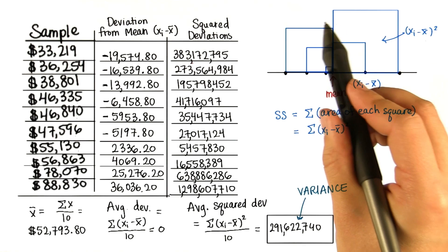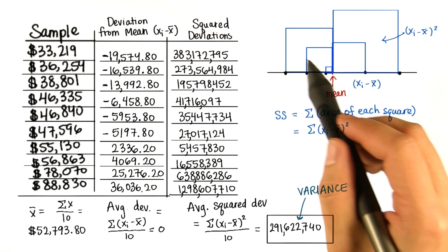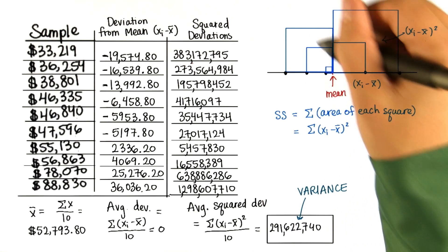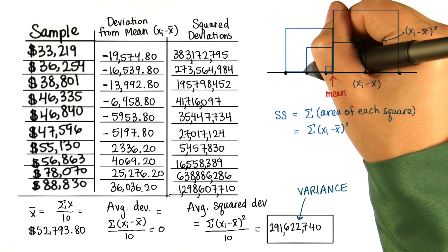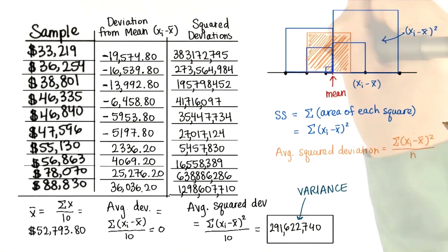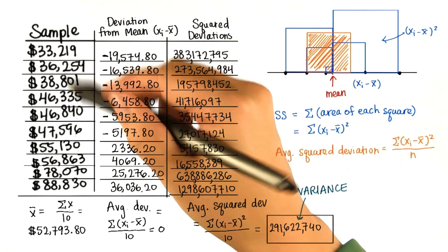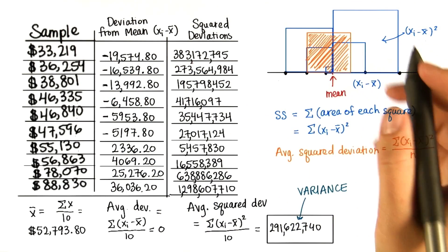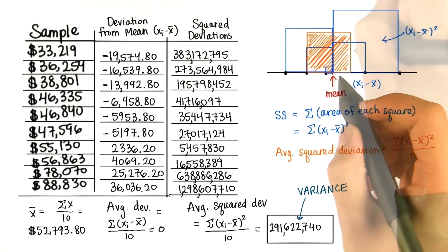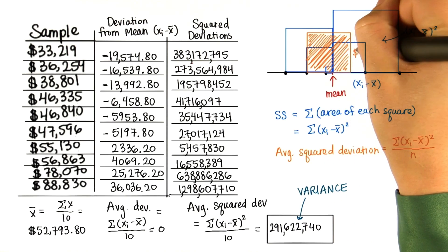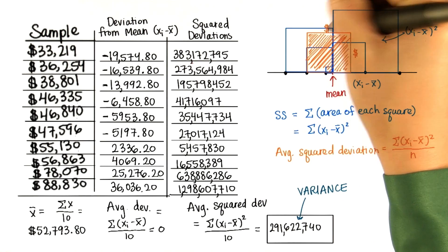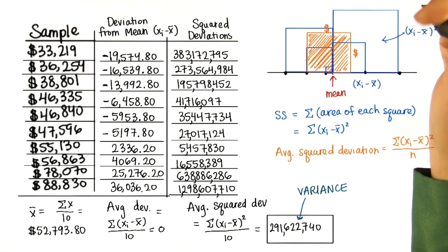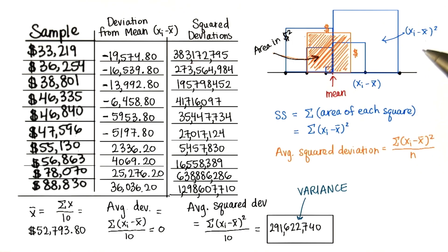So then we find the average square — the average square might be something like this size, let's say. In this case, the dimensions are in dollars, so the area of this square would have units of dollars squared.